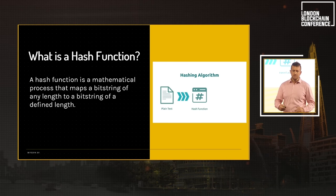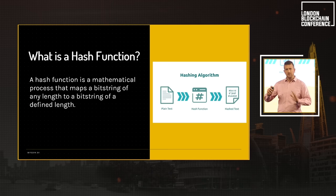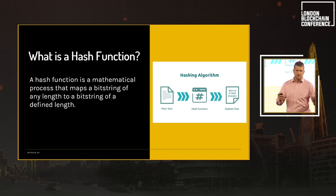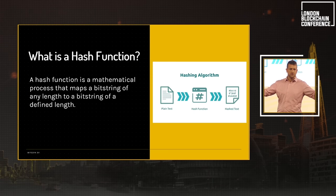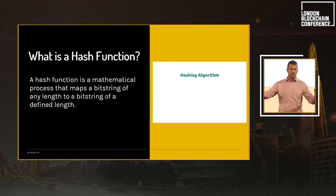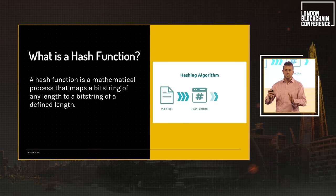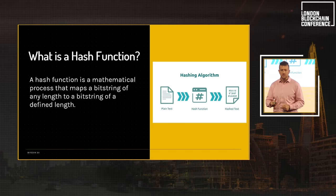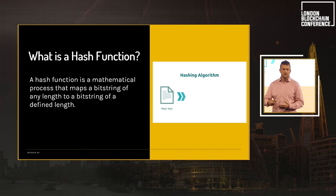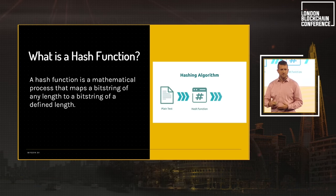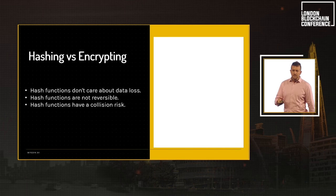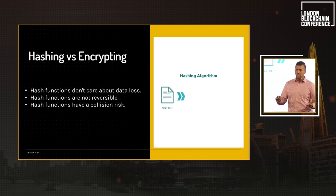A hash function is simply a mathematical process that maps a bit string of any length to a bit string of a defined length. It doesn't matter whether you've got a one-byte file or a 4.3 gigabyte file — it all gets compressed down into that same fixed-size output. The dominant hash function used in Bitcoin is SHA-256, which maps everything to a 256-bit output.